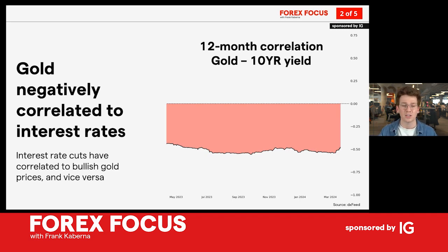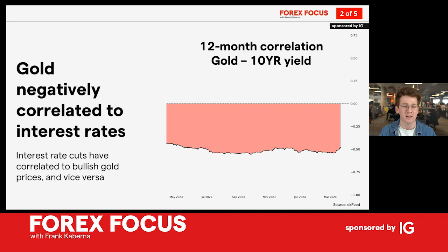The 10-year yield is a really good benchmark for US interest rates — though it's not technically what the Fed controls, it is very much influenced by Fed activity. You see this correlation and it is consistently negative, which is to say: if interest rates are moving higher in the US, gold prices historically have moved lower, and vice versa. That's kind of what we're seeing right now — gold prices moving higher and US interest rates potentially moving lower.